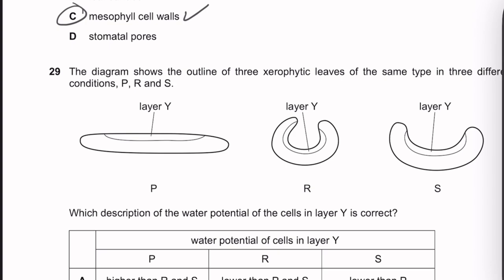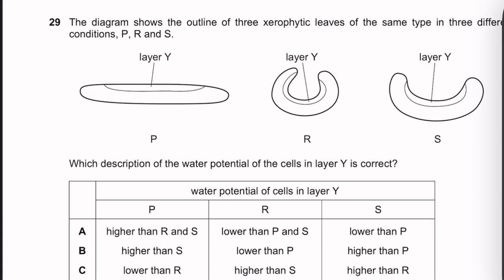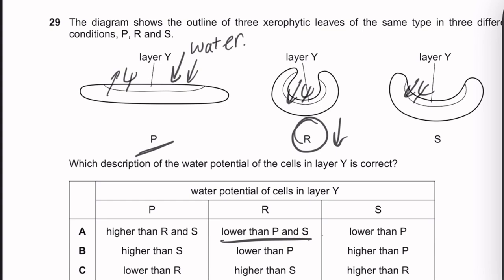Question 29: Diagrams show outlines of three cytoplasm leaves in three conditions P, R, and S. Which description of the water potential of cells in layer Y is correct? Layer Y in P appears more flattened/expanded — indicating high water content and high water potential. Layer Y in R appears most shrunken — lowest water potential. So water potential of Y in P is higher than in R and S, and lower in R than in S. The correct description is: lower than P and S, meaning R has the lowest. Answer: lower than P and higher than R and S — corresponding to the correct letter.